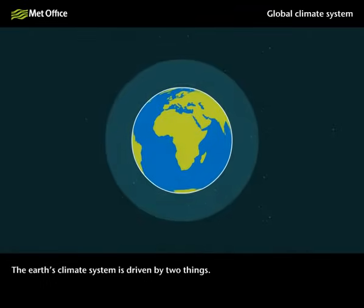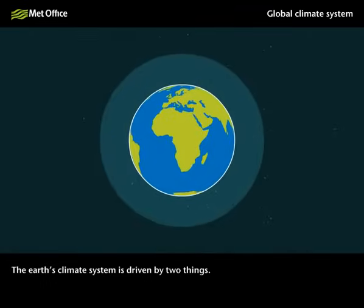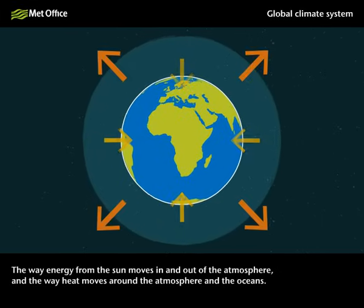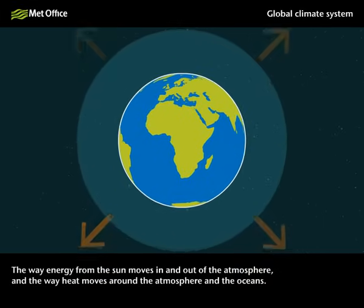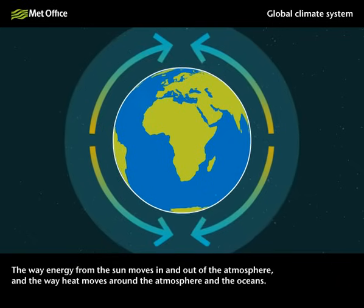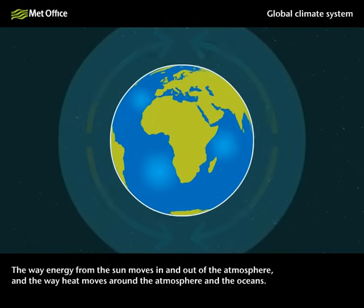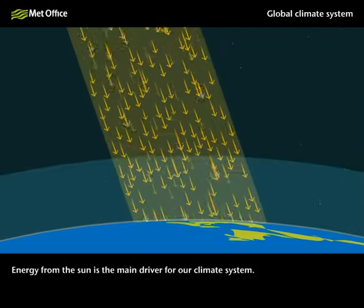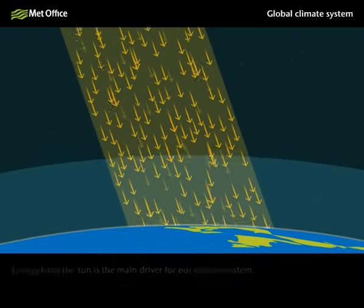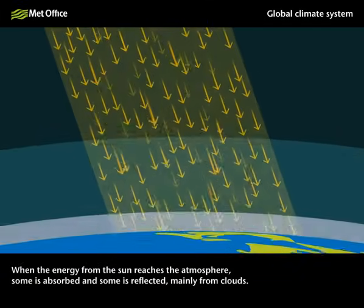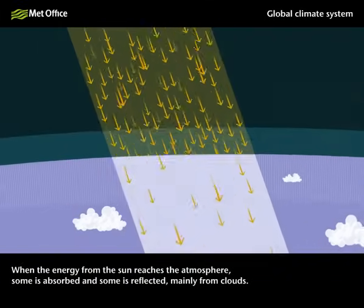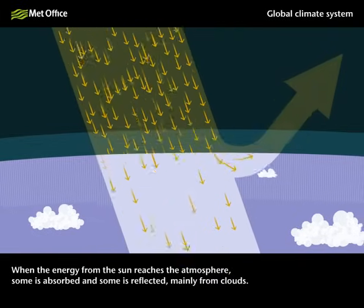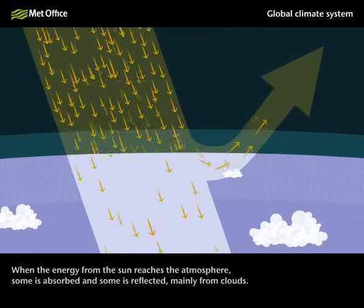The Earth's climate system is driven by two things: the way energy from the Sun moves in and out of the atmosphere, and the way heat moves around the atmosphere and the oceans. Energy from the Sun is the main driver for our climate system. When the energy from the Sun reaches the atmosphere, some is absorbed and some is reflected, mainly from clouds.